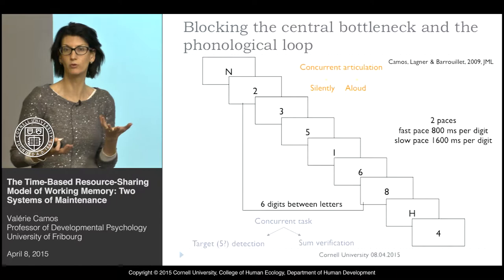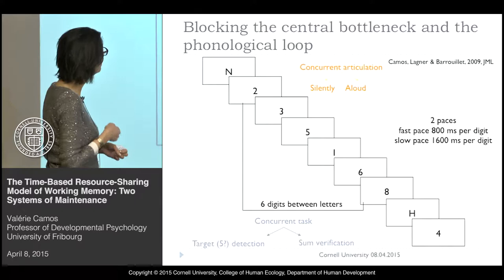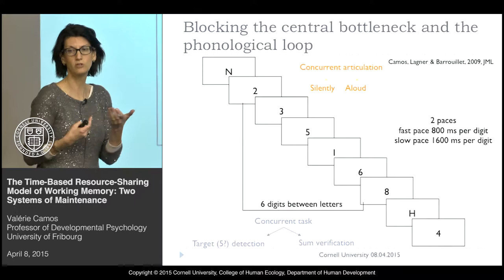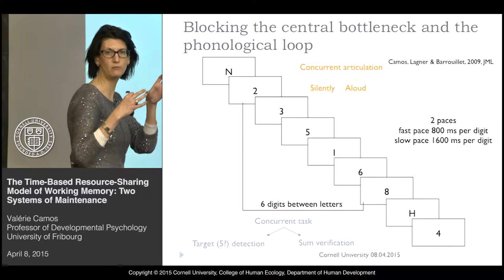This is the way we're manipulating cognitive load — another way we did not present yet. And in a cross-design orthogonally, we either ask participants to do this task silently or to read the digit on screen, which induces articulatory suppression and blocks a possible phonological loop. We also covaried pace to verify if this could affect the relationship between the two systems.